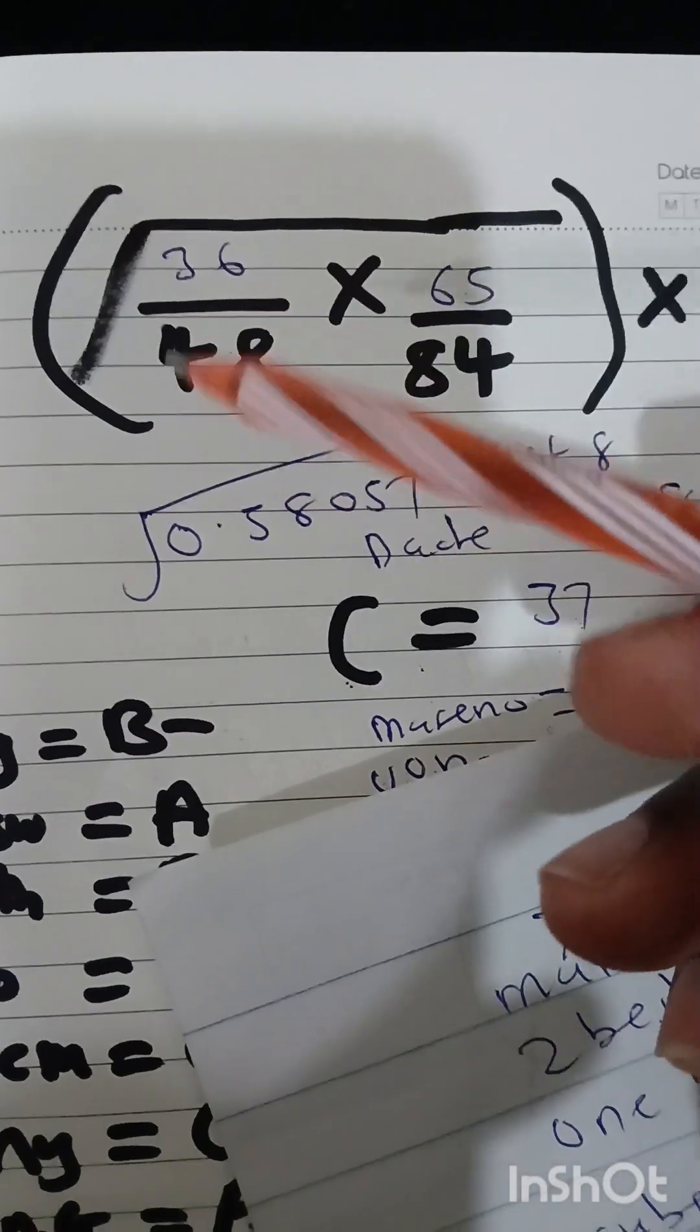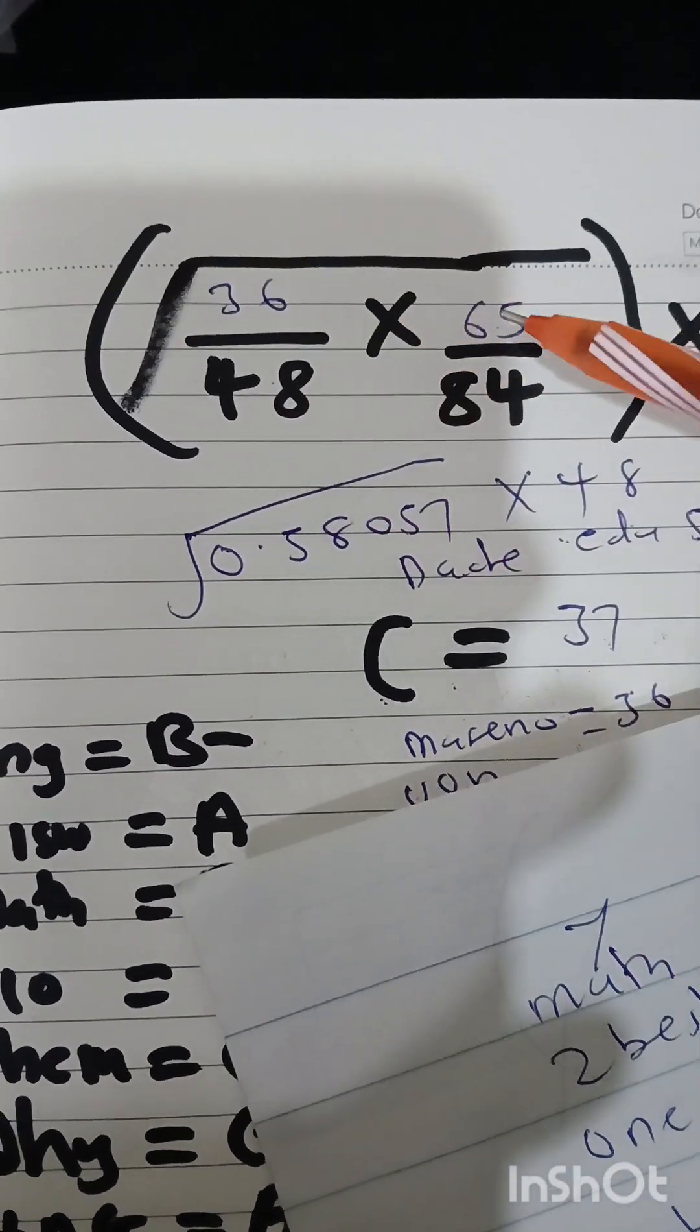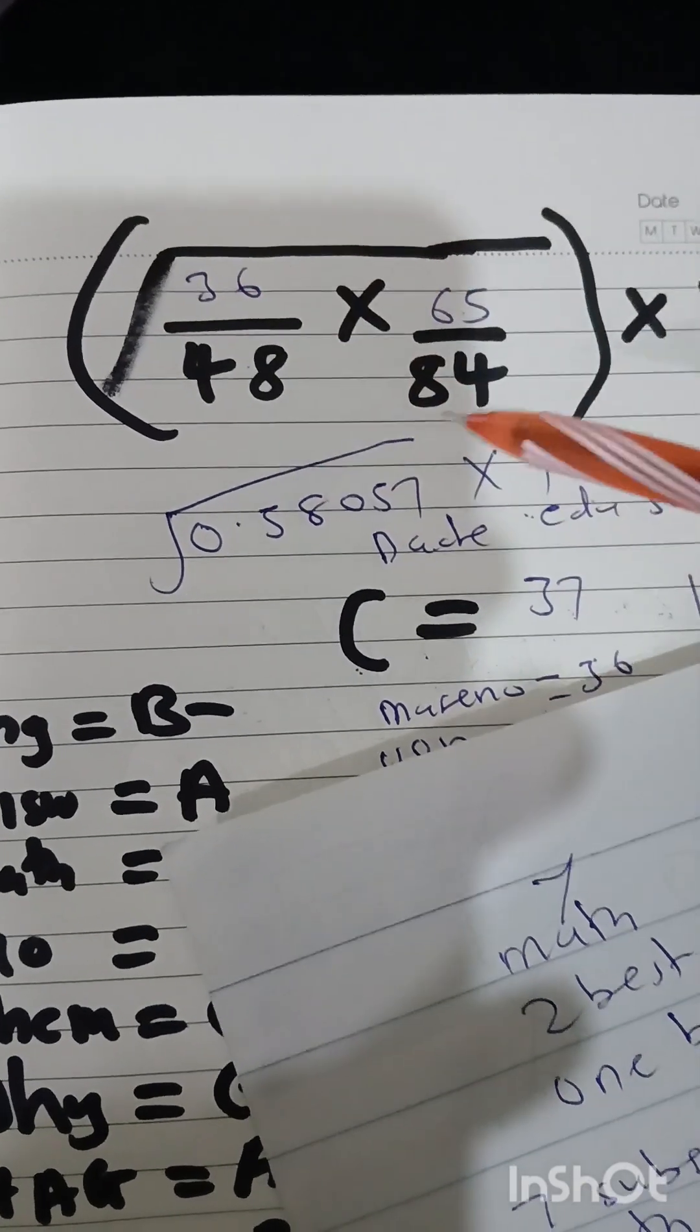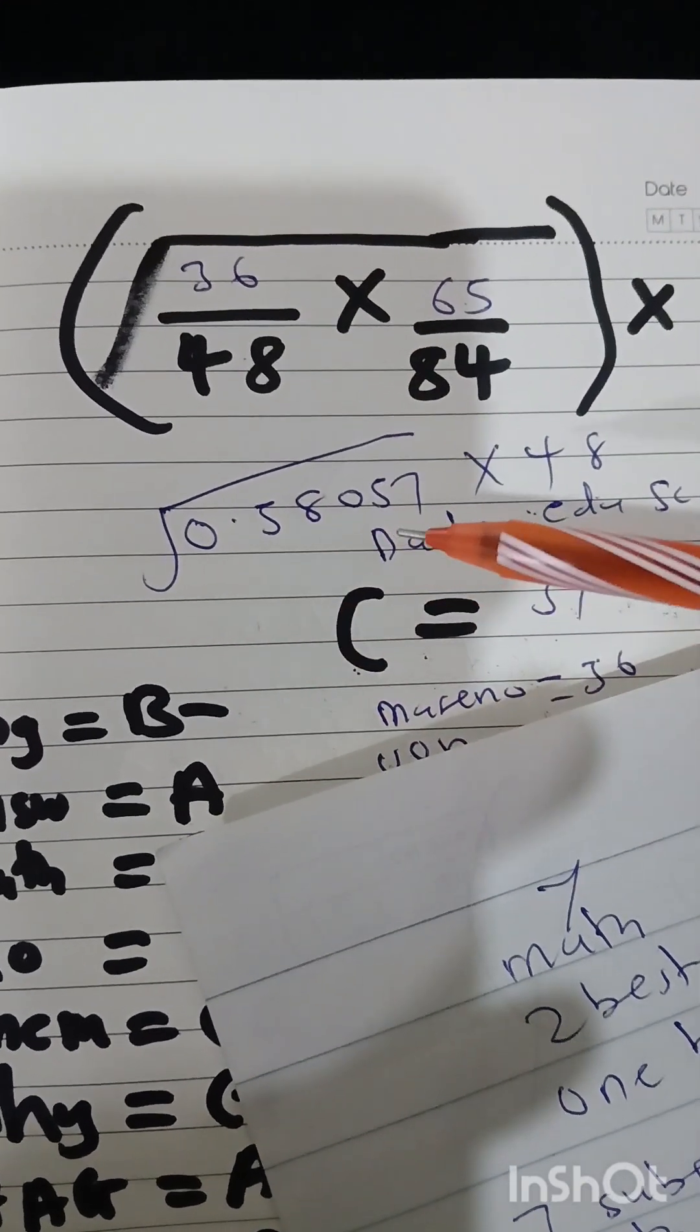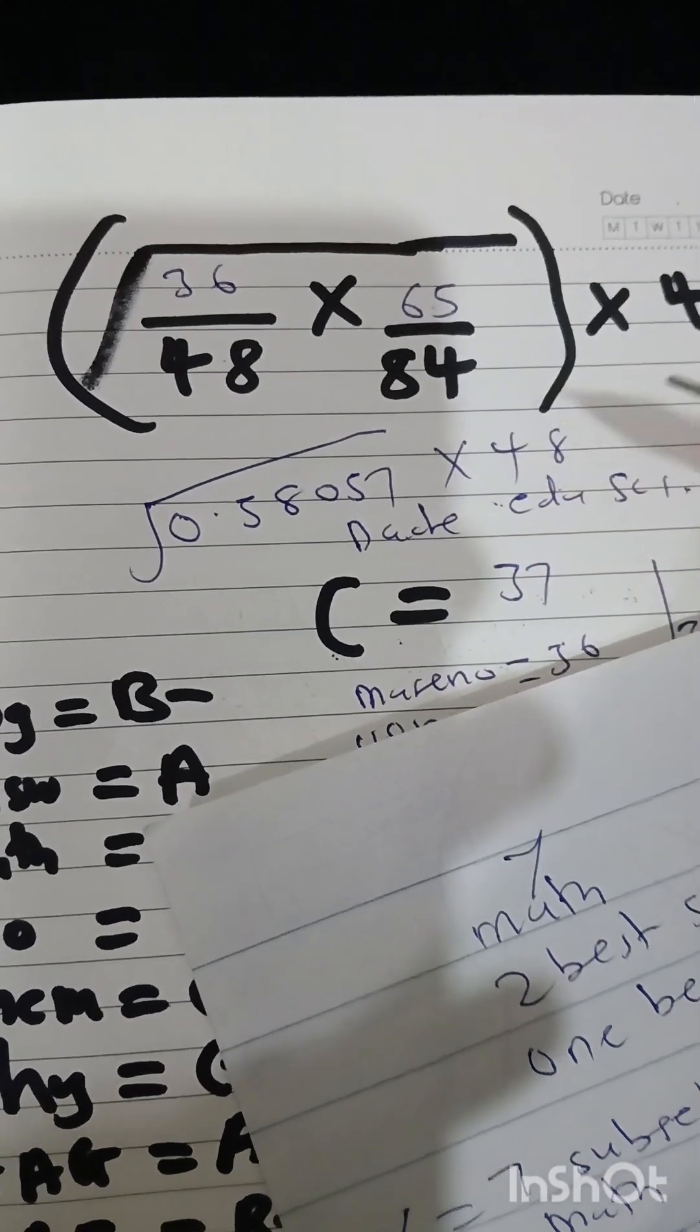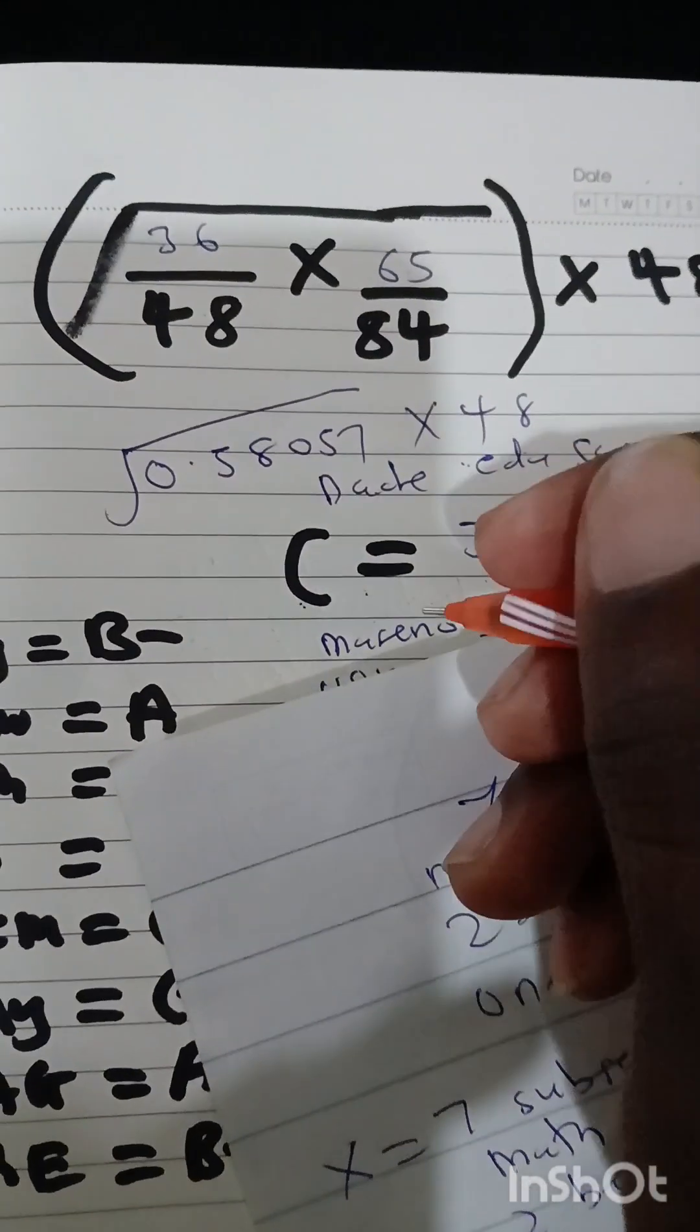So in the formula, we shall have 36 out of 48 multiplied by 65 out of 84. When you find the square root, you shall get 0.58057. When you multiply it by 48, you shall get the cluster point of 37.